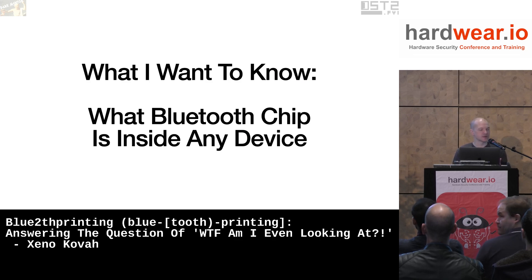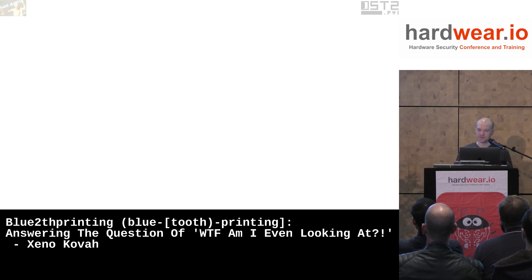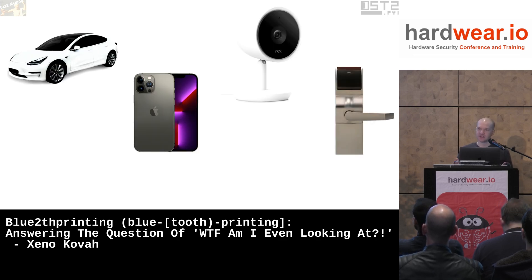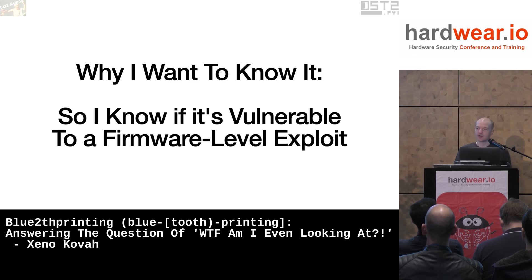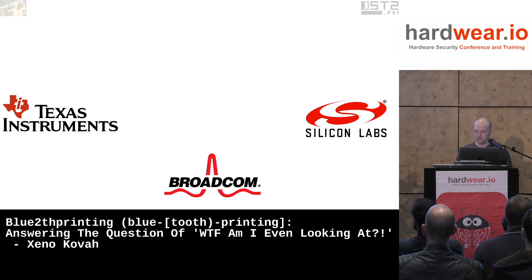The research thread here for this work is: I want to know what Bluetooth chips are inside any given device when I happen to see it sending Bluetooth packets. So you've got some random devices, they all support Bluetooth, and I want to know which specific chip is inside of that device. Now, why would I want to know that? I want to know whether or not it's vulnerable to over-the-air wireless exploitation of the Bluetooth firmware. Knowing which chip will help me know whether or not it's vulnerable to something.